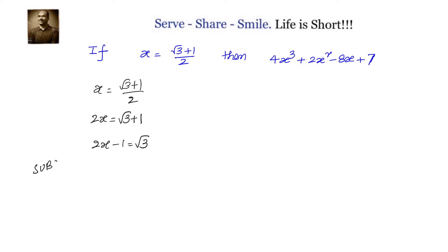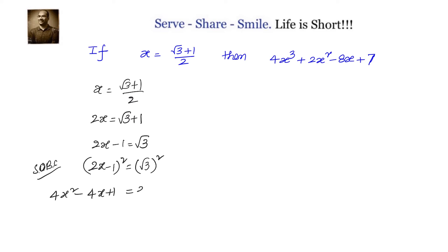Now we will square both sides so that we can remove the square root. We write (2x minus 1) squared equals (√3) squared, giving us 4x squared minus 4x plus 1 equals 3. This simplifies to 4x squared equals 4x plus 2, or equivalently, 2x squared equals 2x plus 1.